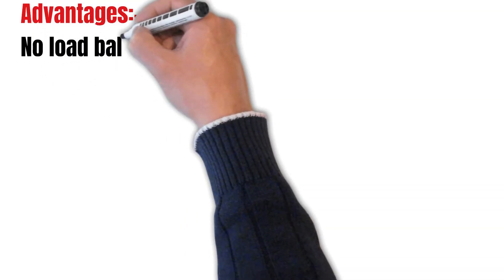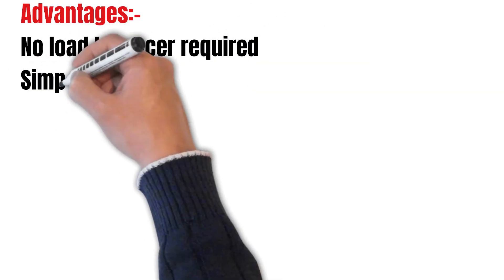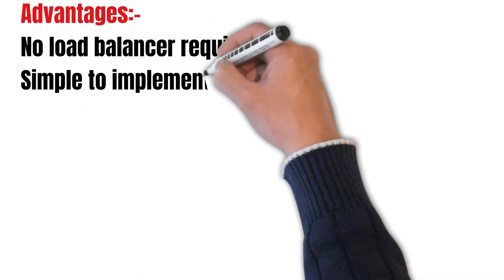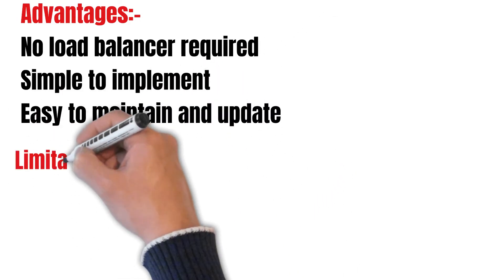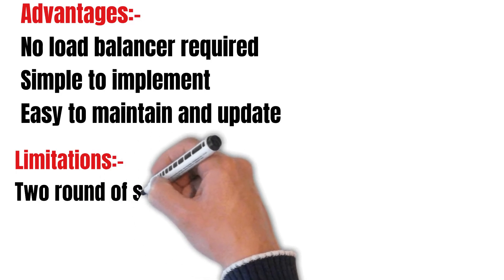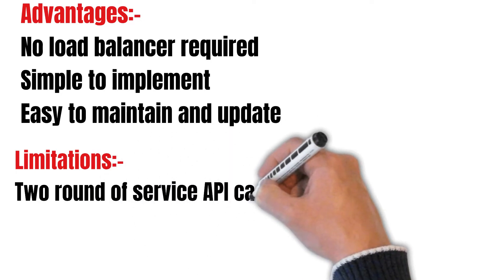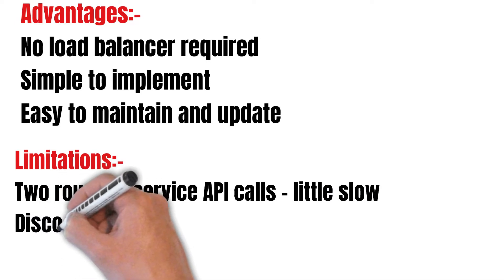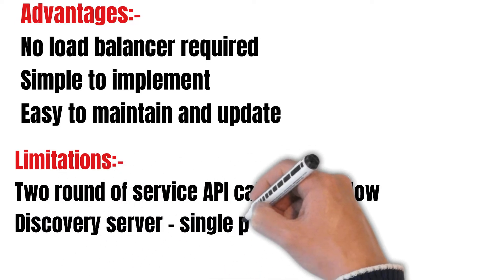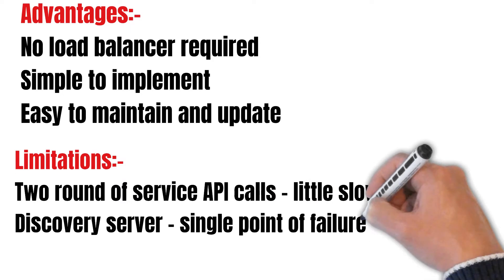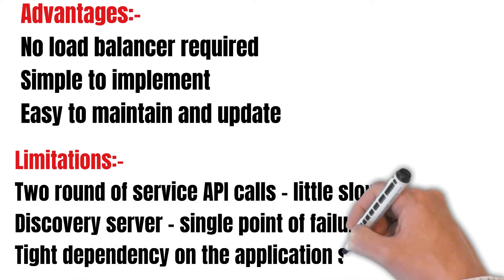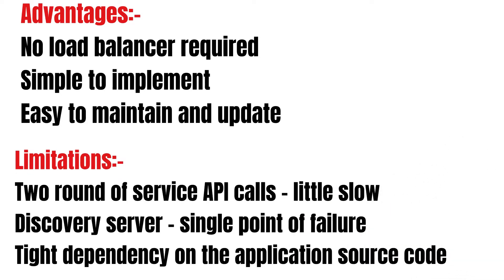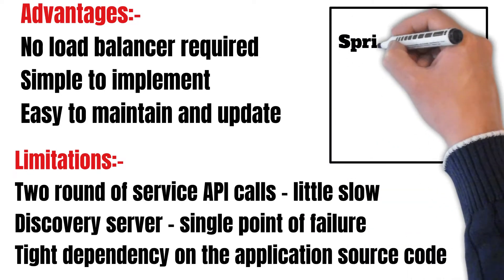Its advantages are that no load balancer is required. It is simple to implement and easy to maintain and update. Its limitations are that there are two rounds of service calls — first to the discovery server and then to the actual service — which makes it a bit slow. Also, the discovery server is a single point of failure; if it fails, the complete system goes down, and it has tight dependency on the application source code. Examples include Spring Eureka and Ribbon.